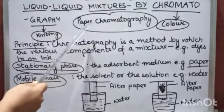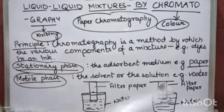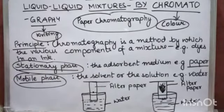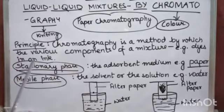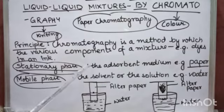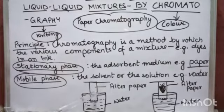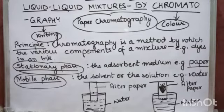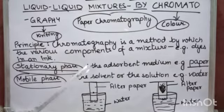This chromatography is also known as paper chromatography because paper is used to detect the components in a mixture. This involves two phases: the stationary phase — which is the paper or adsorbent medium that doesn't move — and the mobile phase. Here the stationary phase is a filter paper that doesn't move. The mobile phase is water, the solvent, which moves by capillary action.